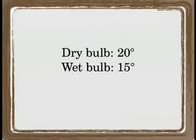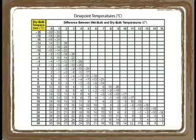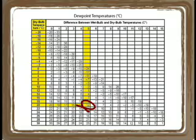For an example of how to find dew point, we'll use 20 degrees for the dry bulb and 15 degrees for the wet bulb. That would give us a difference of 5. Then we would go down the dry bulb temperature to 20, follow the 5 column down and the 20 row over, which would give us an answer of 12 degrees C for dew point.